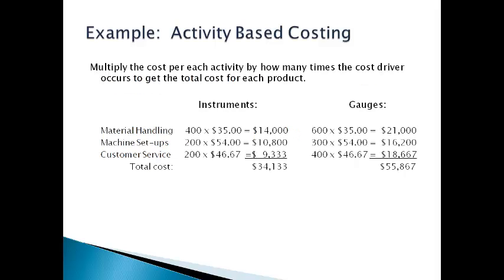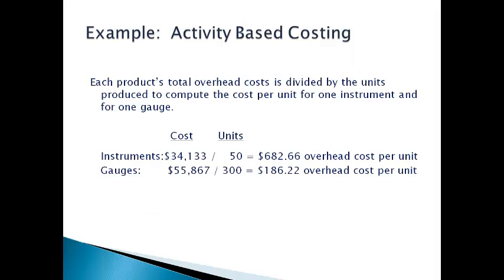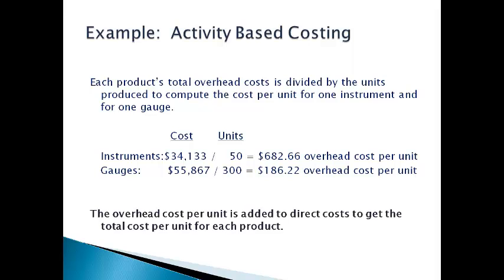The cost incurred each time the activity occurs is multiplied by the number of times the activity happens for each product to get the total allocated to each product. This is similar to allocating manufacturing overhead under traditional costing, except more than one activity is used. The total amount is split between two products based on what is required to support each product. The total overhead cost for one product is determined by dividing the total allocated cost by the total number of units produced. The total overhead cost per unit is then added to the cost for direct material and direct labor to get the total cost.